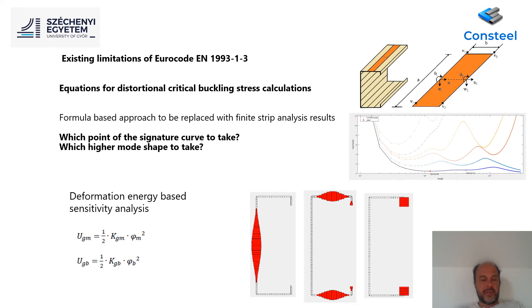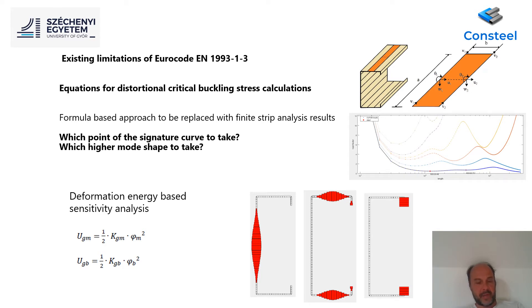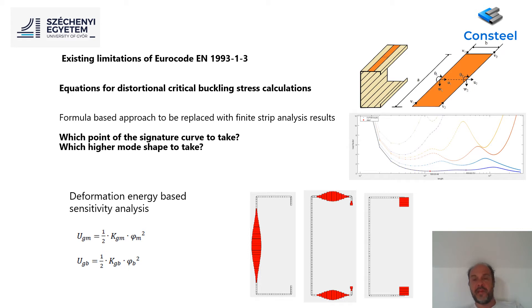There is a typical problem when a finite strip analysis is performed: it is difficult to judge at which point of the signature curve the result needs to be used. A technique already used in ConSteel for bar members, but also applicable for cross-sections, can be used here: assume each first- or higher-order buckling shape as a possible deformation, and based on the deformation and the stiffness matrices, calculate deformation energies. Distortion buckling can be identified by activating the elements of the stiffness matrix related to membrane deformation. The distribution of deformation energies along the section indicates the zones where this type of energy has its maximum value.